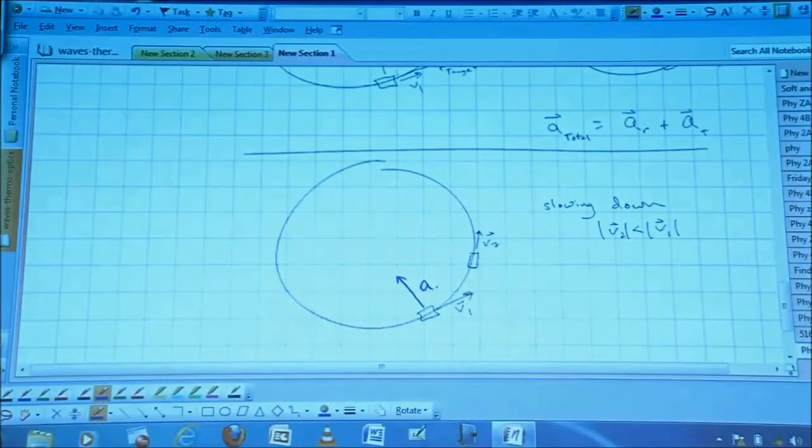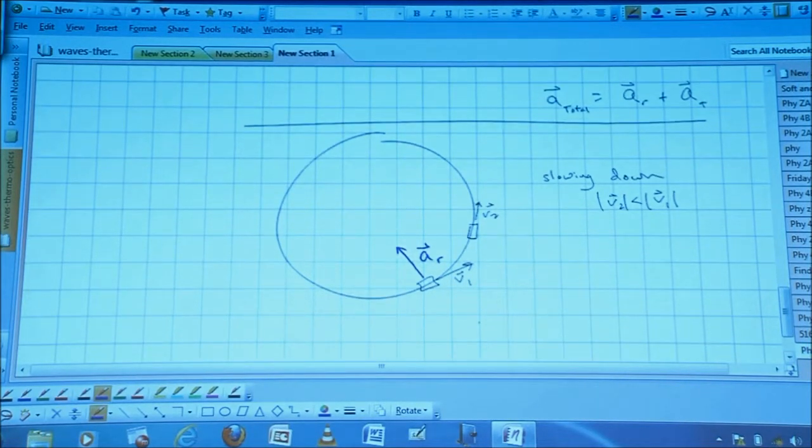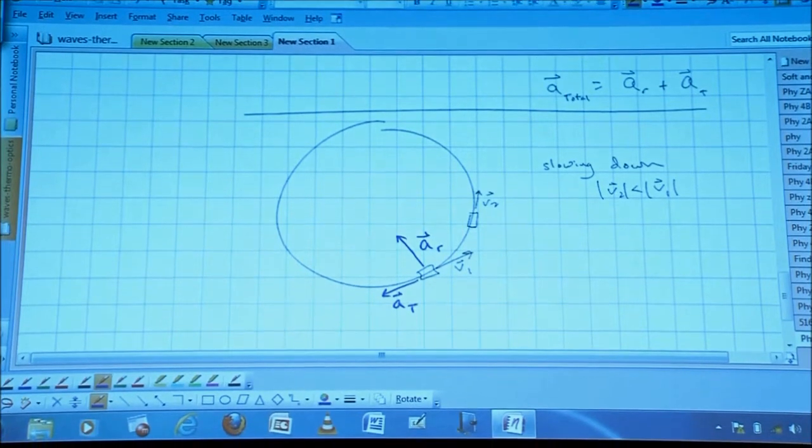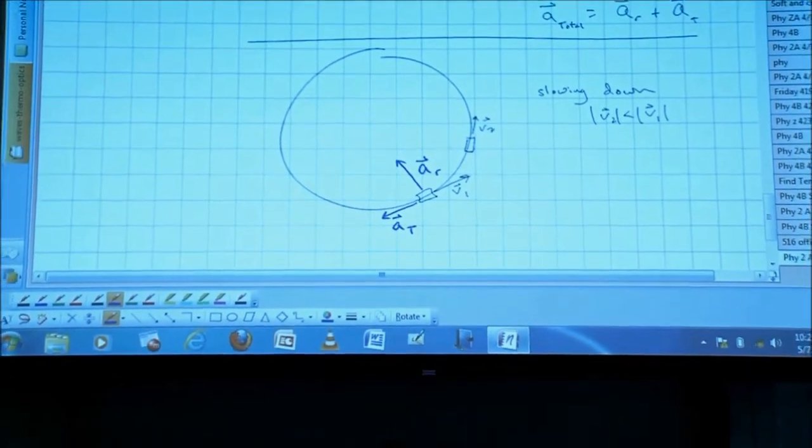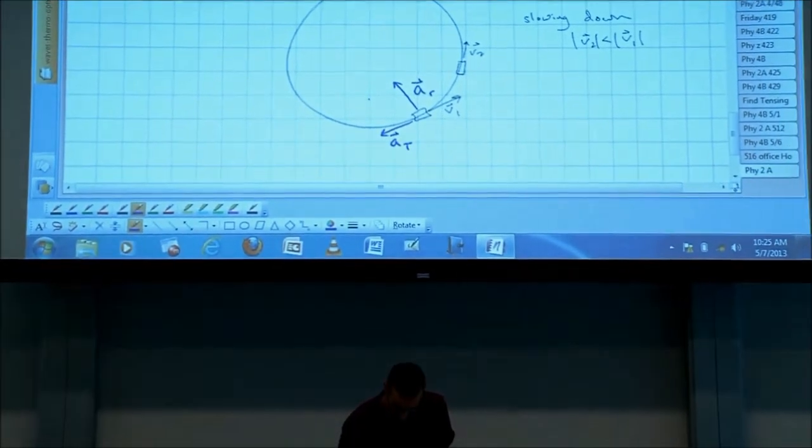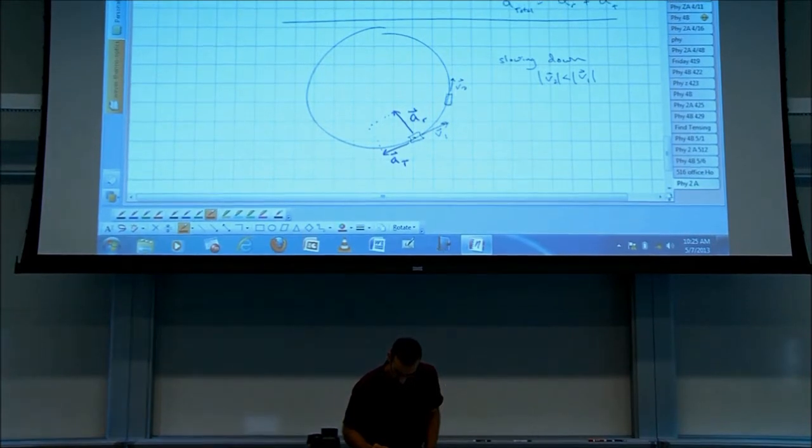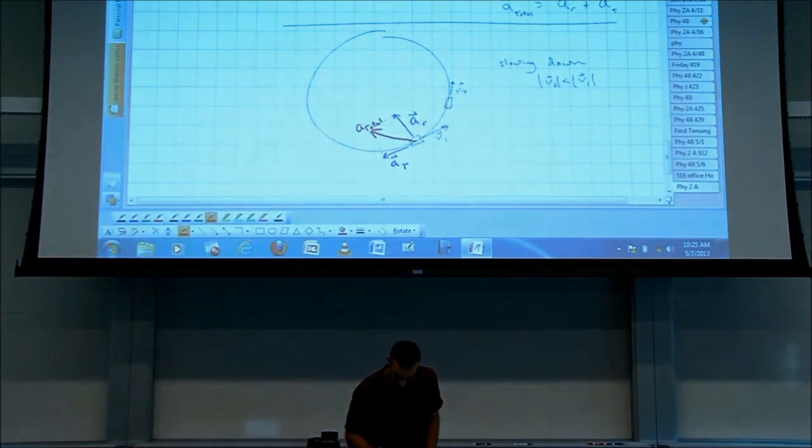Check with your neighbor. Do you have a radial acceleration that looks like that? Do you have a tangential acceleration that looks like that? Because it's slowing down, the acceleration must be opposite the direction of the velocity. And you add them together. And you get a net acceleration, total acceleration that looks something like that, in that direction.